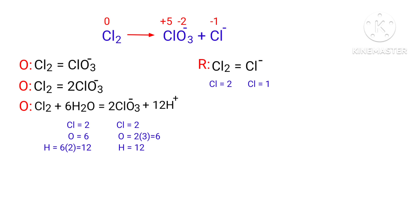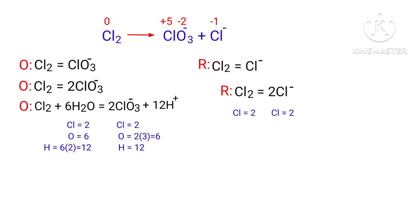Now you can balance the number of atoms in the reduction half-reaction. To balance the Chlorine atoms we need to put a coefficient of 2 in front of Cl⁻. Now the number of atoms are balanced in the reduction half-reaction.